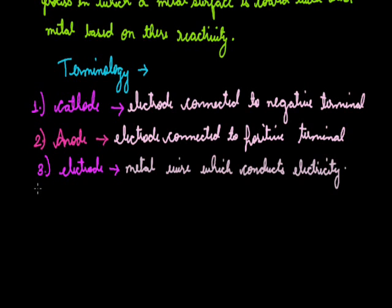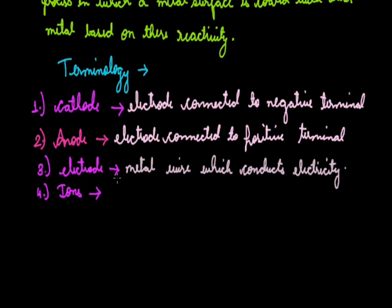Our next term is ions. We know that an atom is electrically neutral because it has the same number of electrons and protons. But there is sometimes a gain or loss of electrons for stability. Due to this gaining or loss of electrons, atoms become charged. Hence, an atom or group of atoms which are charged are known as ions — they can be defined as charged species.